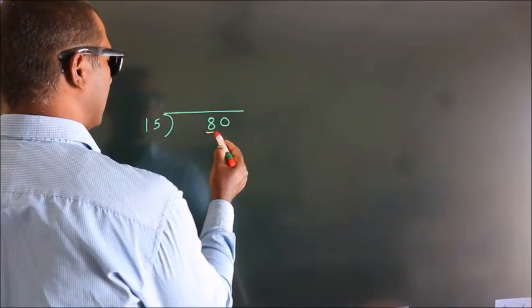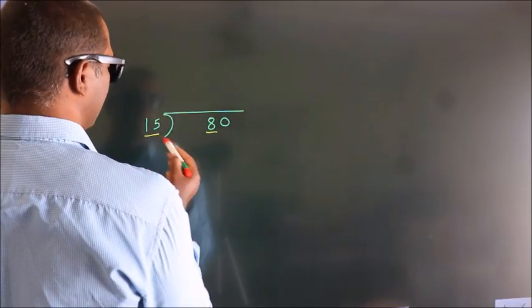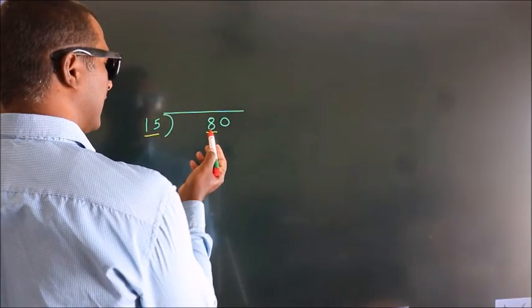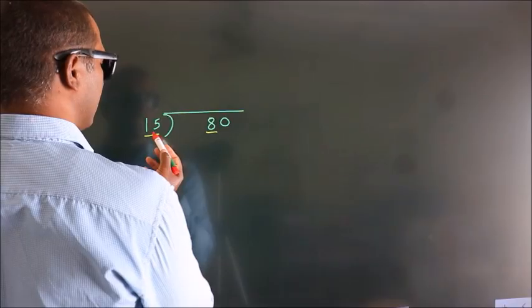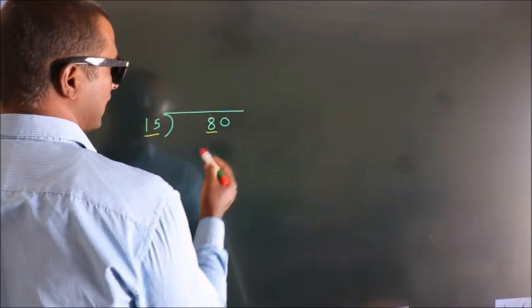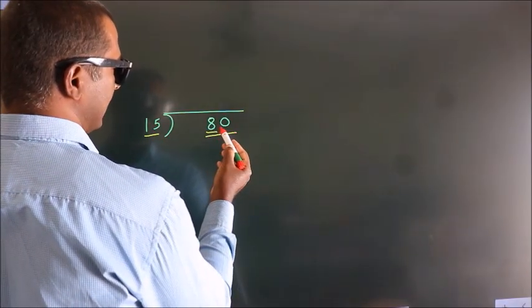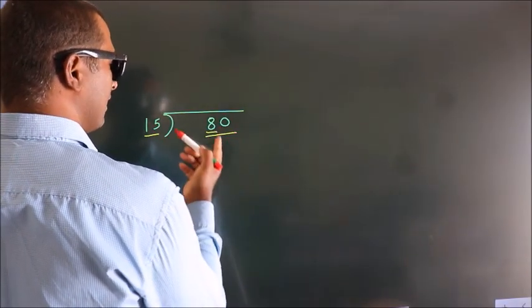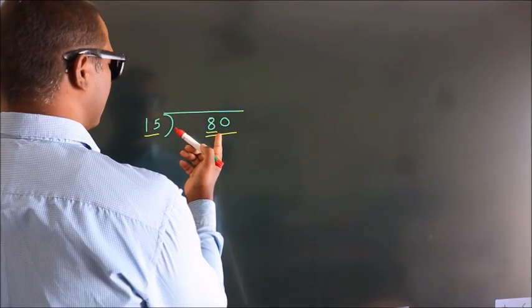Here we have 8, here 15. 8 is smaller than 15. So, we should take two numbers — 80. A number close to 80.